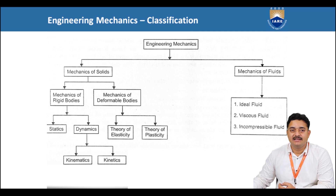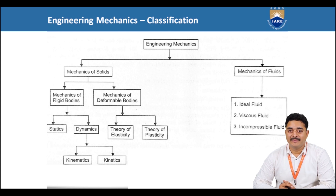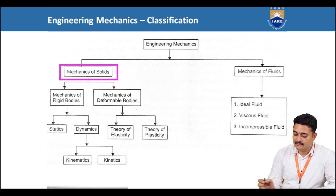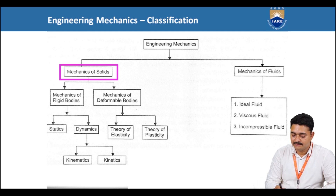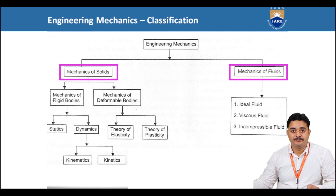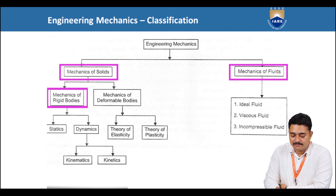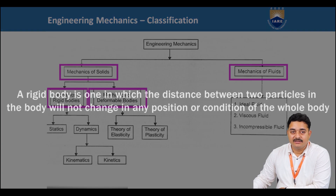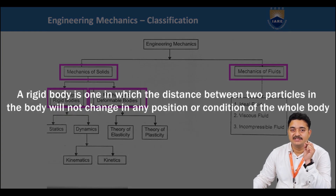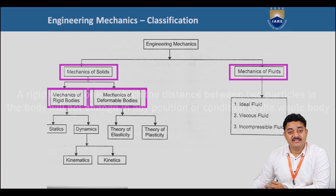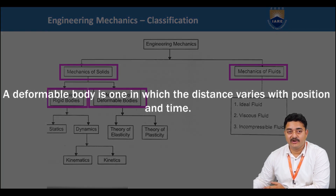Now let us discuss the classification of engineering mechanics. The broad classification can be given into mechanics of solids and mechanics of fluids. Solid mechanics is classified into mechanics of rigid bodies and mechanics of deformable bodies. A rigid body is one in which the distance between two particles in the body will not change in any position or condition, even when various forces are acting on it, whereas a deformable body is one in which the distance varies with position and time.